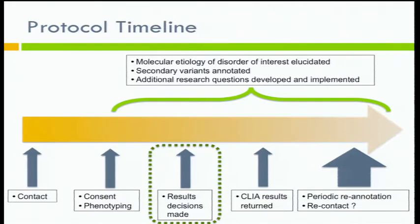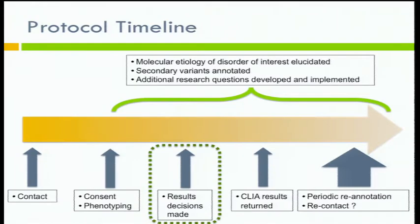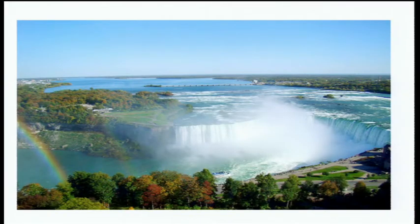Many of the concepts we review with participants in the informed consent session are not entirely revolutionary to genetic studies — every consent session contains information about what we're asking people to do and their risks and benefits. But really, what we're focusing on is the fact that they can learn a whole lot of information. The analogy I find most helpful for describing the data we generate from a family's exome sequence is a torrent — like getting a drink of water from a fire hose. We have an absolute downpour of data, and our goal is to sift through this vast amount to find something we're interested in.